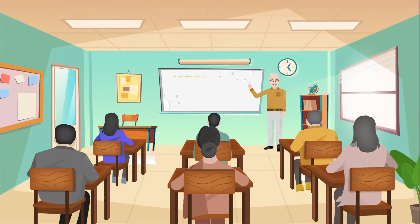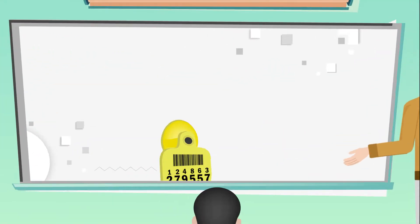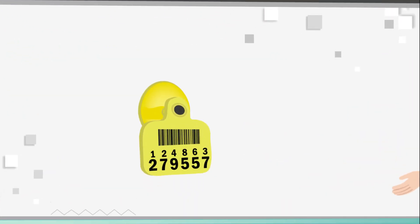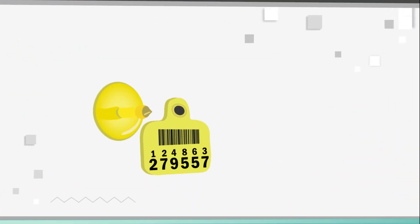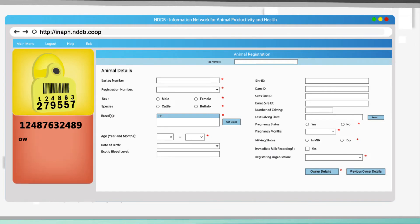The National Animal Disease Control Programme includes all cattle, cow, buffalo, sheep, goat and pig. Under this scheme, animals are identified and tagged on their ear, followed by registration on inaph.nddb.coop — the Information for Animal Productivity and Health portal.